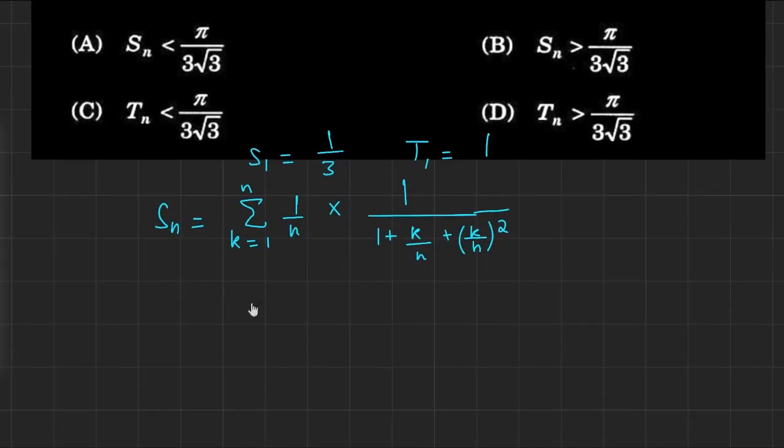If I did take the limit as n went to infinity of this, I see that I can get a Riemann sum here because, well, this summation is essentially 1 over n times sum from k equals 1 to n of 1 over 1 plus k over n plus (k over n) whole squared.